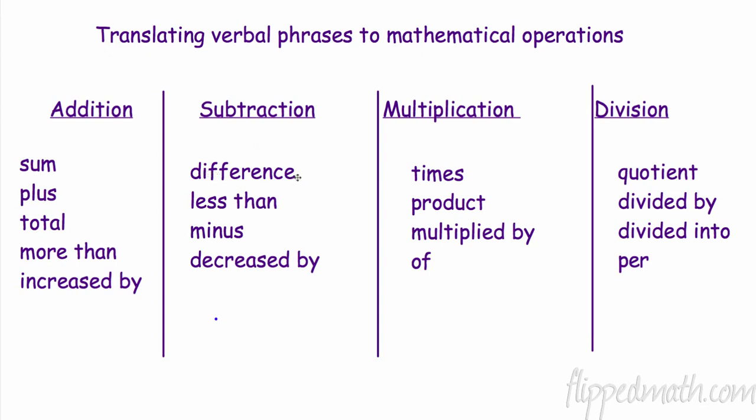Subtraction. Difference is the answer to a subtraction problem. So if it says find the difference, you know you need to subtract. And if it says find the difference of 7 and 8, 7 goes first. If it says find the difference of a number n and 2, it's n minus 2. Whatever is spoken first goes first, because you know subtraction order matters. 6 minus 2 is 4. 2 minus 6 is negative 4. Less than is subtraction, 8 less than 4. Minus, obviously, is subtraction. And as well, decreased by is subtraction.